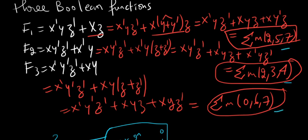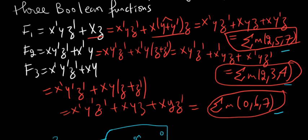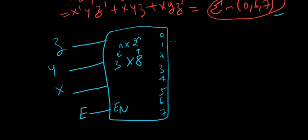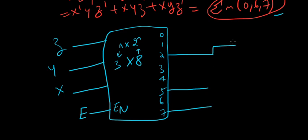Now we connect the outputs to align with the minterms we derived. For F1, the minterms are 2, 5, and 7, so we OR together decoder outputs 2, 5, and 7 to produce F1.